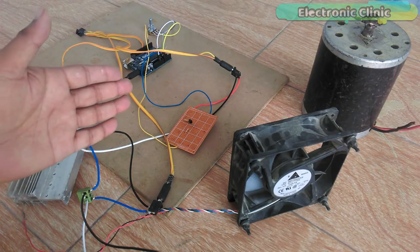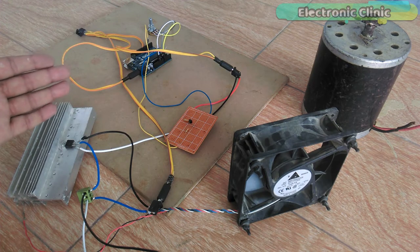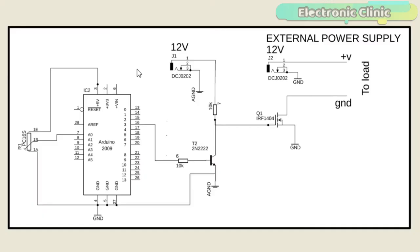The components used in this project can be purchased from Amazon. The component purchase links are given in the description. This is the complete circuit diagram designed in KiCad Eagle 9.1.0 version. If you want to learn how to make a schematic and PCB, then watch my tutorial. The link is given in the description.